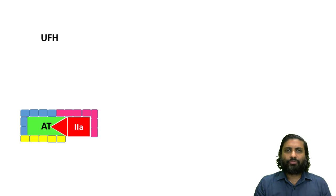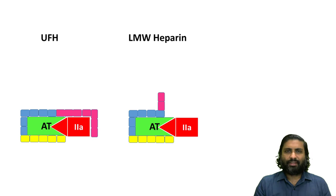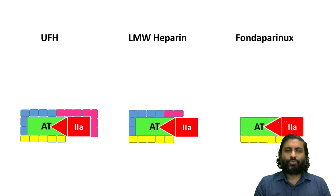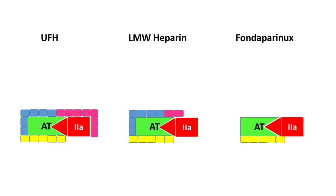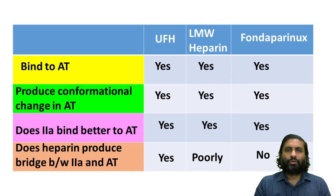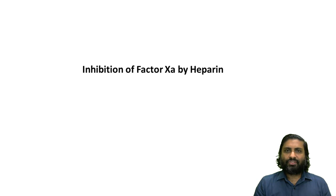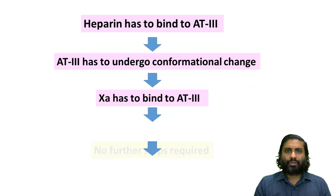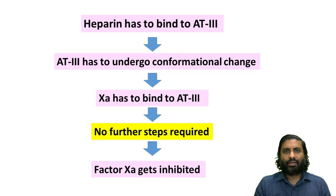Low molecular weight heparin does not have as great a length as unfractionated heparin, and therefore its ability to form cross bridges or scaffolding is limited — this explains why low molecular weight heparin does not inhibit factor 2a as effectively. Fondaparinux is such a short molecule that there is no question of cross bridge or scaffolding formation, and therefore fondaparinux does not inhibit factor 2a at all. When considering the inhibition of factor 10a by heparin, cross bridges and scaffolding are not required, which is why all forms of heparin inhibit factor 10a equally.